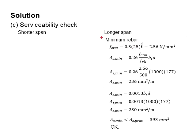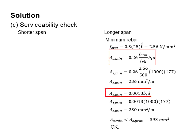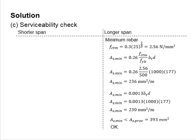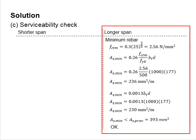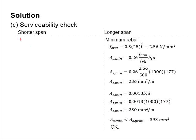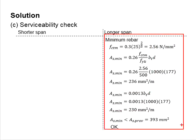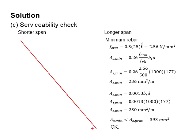Next, check for the minimum amount of reinforcement using two equations, with the larger value governing. The as_provided must be greater than as_min. Since less reinforcement is typically provided in the longer span, check minimum rebar at the longer span. It is not necessary to check the shorter span — if the longer span passes, the shorter span with its larger reinforcement is unlikely to fail.